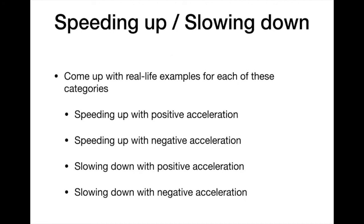Take a moment on your own, and then I'll break you into groups. See if you can come up with a real-life example for each of these categories: speeding up with positive acceleration, speeding up with negative acceleration, slowing down with positive acceleration, and slowing down with negative acceleration. I like to think of vertical movement here — taking up to always be positive makes intuitive sense, whereas calling left or right positive is just arbitrary.